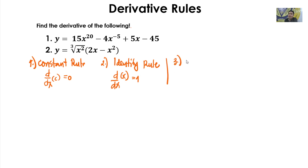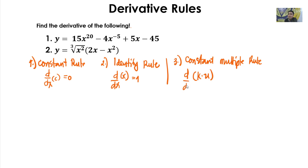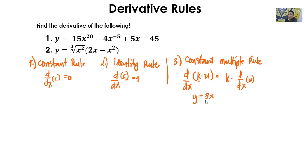Number three, we have the Constant Multiple Rule. The derivative of k·u with respect to x, where k is a constant number and u is a differentiable function of x — what you do is separate k, making it a multiplier, times the derivative of u with respect to x.